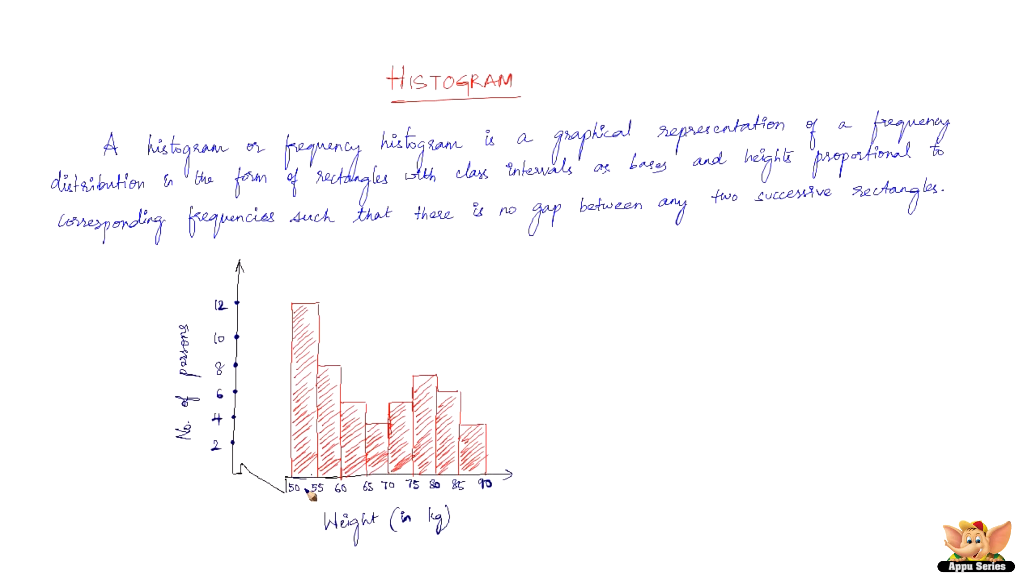And heights proportional to the corresponding frequencies. Now between 50 and 55 we've got heights proportional to corresponding frequency. There are 12 people. So this particular bar here in the histogram corresponds or points to 12 people. Such that there is no gap between any two successive rectangles. So this is all about histogram.